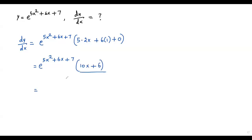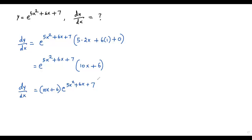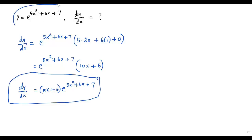So we can write this in front of the exponential. The final answer is dy over dx equals (10x + 6) times e to the power 5x squared plus 6x plus 7. So this is the derivative of the given function with respect to x.